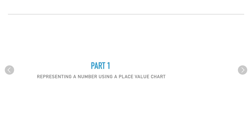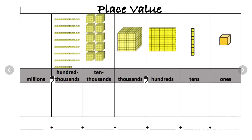This video has three parts. Let's dig into part one: representing a number using a place value chart. In this chart I start at ones and go all the way to millions. As you move to the left, the place value increases — ones, tens, hundreds, thousands, ten thousands, hundred thousands, millions.